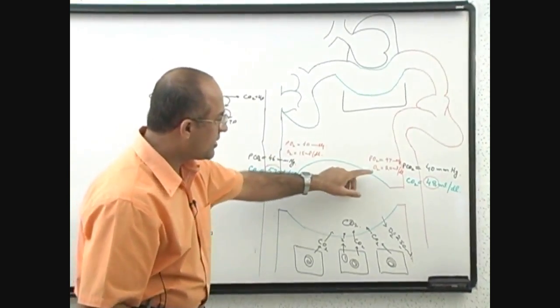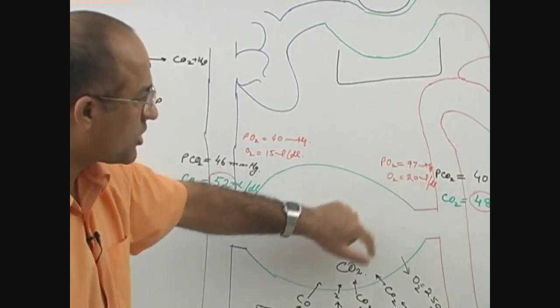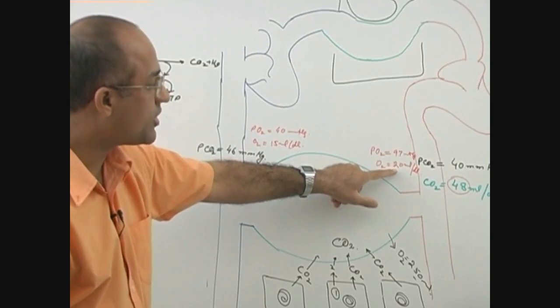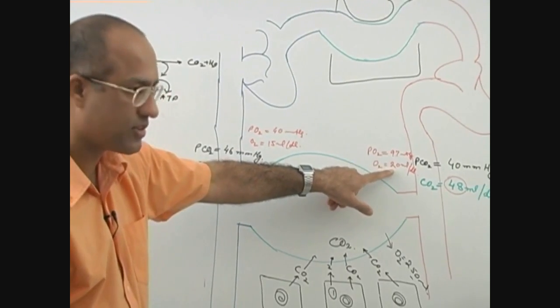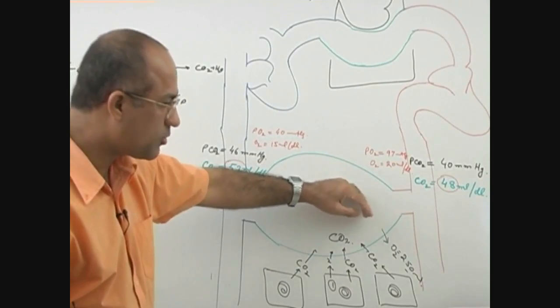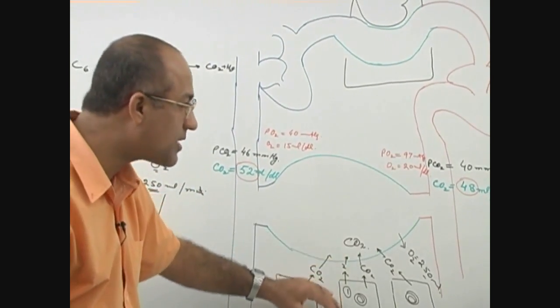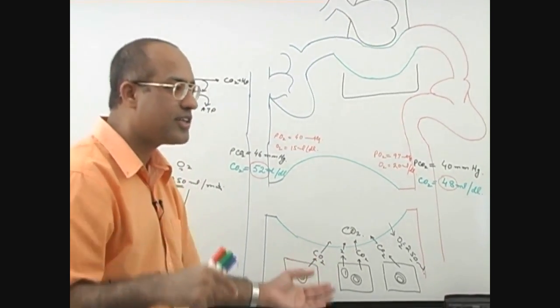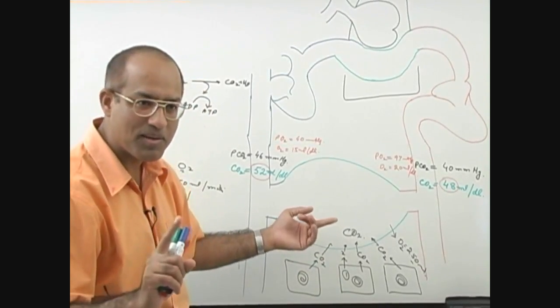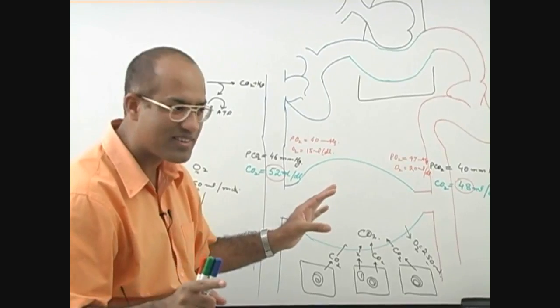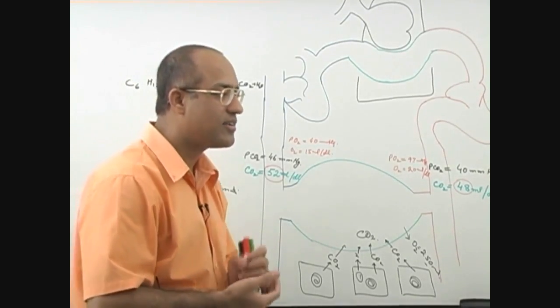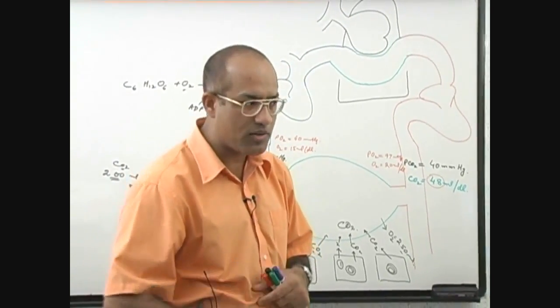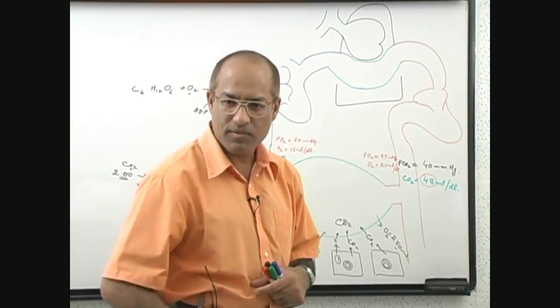It means that you have to compare that oxygen comes to the tissue under the pressure of 97, and 100 ml blood containing 20 ml of oxygen, when it is passing through the systemic capillaries it delivers how much oxygen? 5 ml. And simultaneously it is picking up how much carbon dioxide? 4 ml. Now you understand why it makes sense, right?